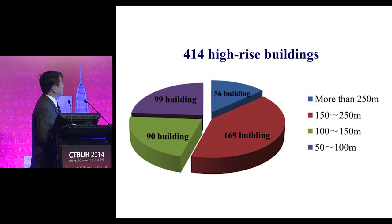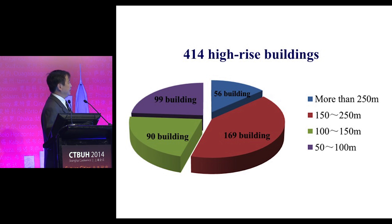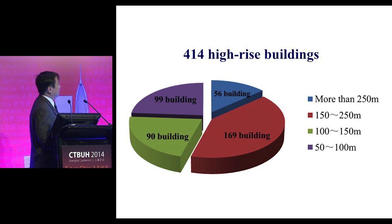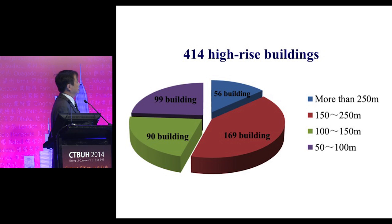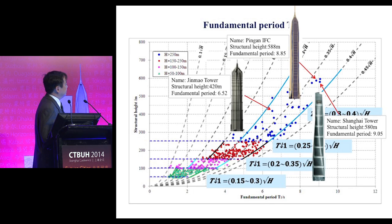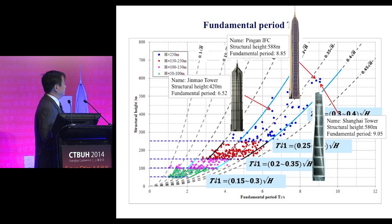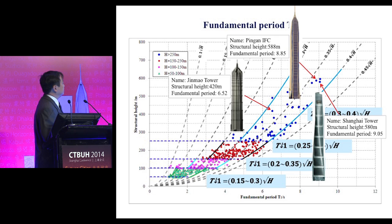The structure types are shear wall, frame-shear wall, or frame-tube. Our sample includes 56 buildings over 250 meters and 169 buildings from 150 to 250 meters, meaning more than 200 samples are higher than 150 meters. One example is a building in Guangzhou at 420 meters high with a fundamental period of 6.5 seconds.